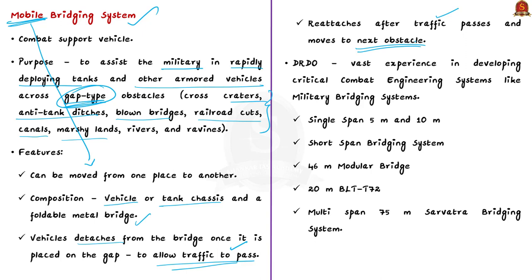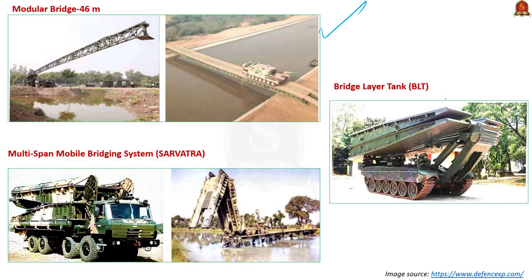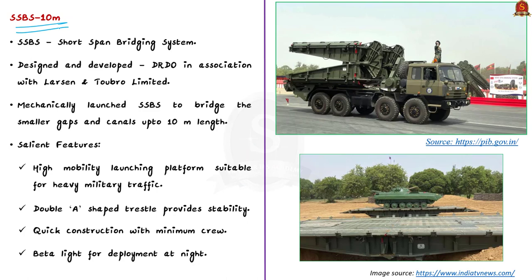Mobile bridging systems play an important role in combat operations. DRDO has vast experience developing critical combat engineering systems, including military bridging systems. It has already developed a single-span 5m and 10m short span bridging system, a 46m modular bridge, a 20m BLT T-72, and the multi-span 75m Sarvatra bridging system. Today's focus, the SSBS 10m, has been indigenously designed and developed by DRDO in association with Larsen and Toubro Limited.